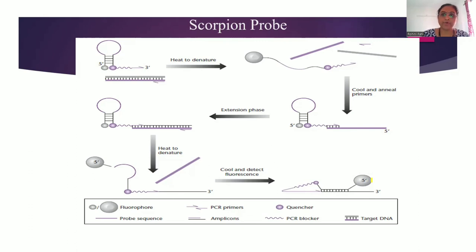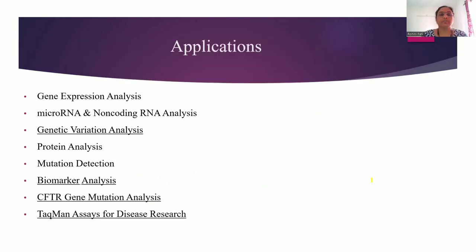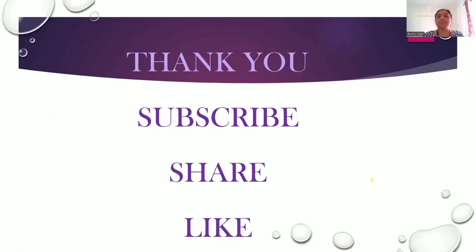In summary, ethidium bromide, SYBR Green 1, Taqman probe, molecular beacon, and scorpion probe are the molecules used for detecting real-time DNA concentration during PCR. Applications of real-time PCR include expression analysis, microRNA and non-coding RNA analysis, genetic variation analysis, protein analysis, mutation detection, biomarker analysis, CFTR gene mutation analysis, and Taqman assay for disease research. Thank you for watching — please subscribe and share.